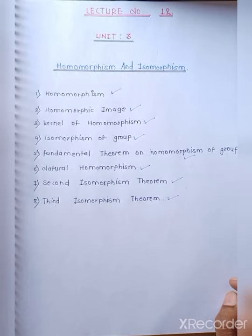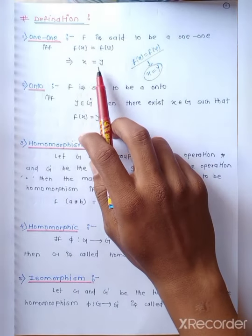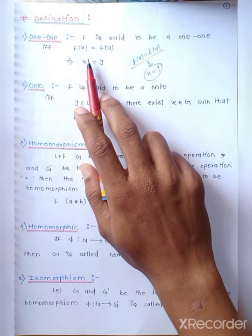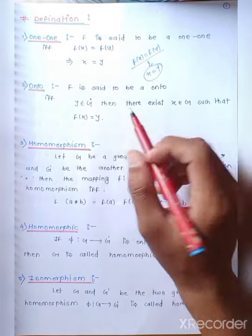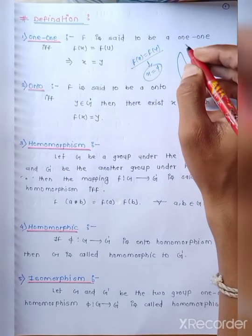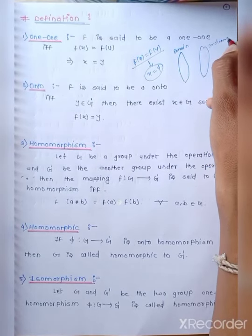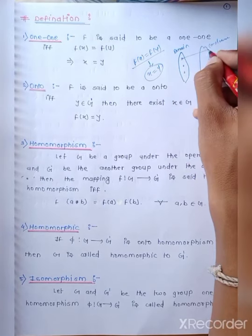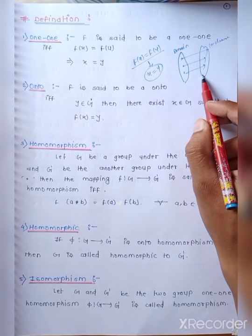Now we see the definition of a one-one function. Let f be a mapping. f is said to be one-one if f(x) equals f(y) implies x equals y. If we have just one image — this is our domain and this is our codomain — it is called a one-one mapping.